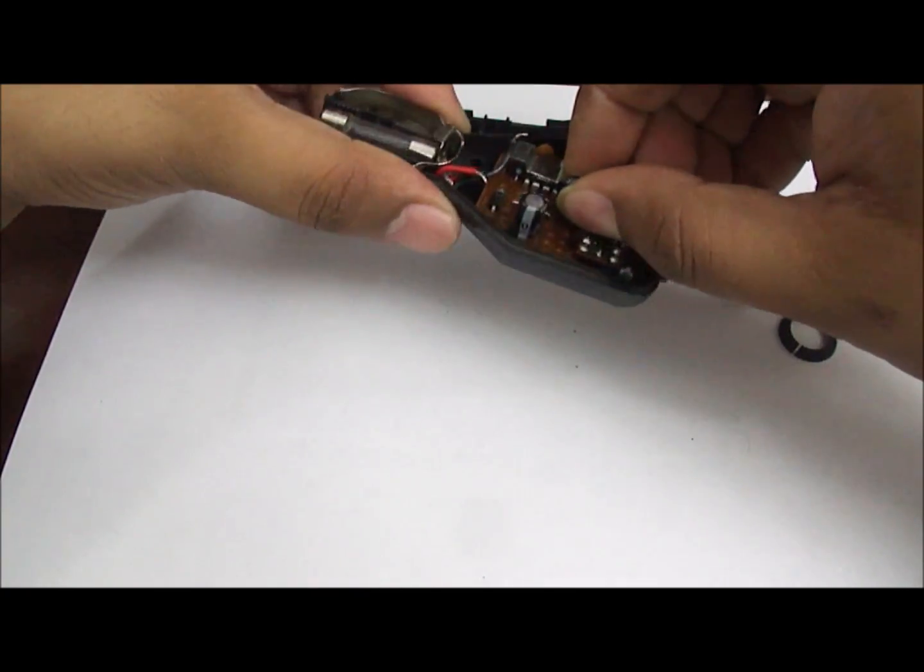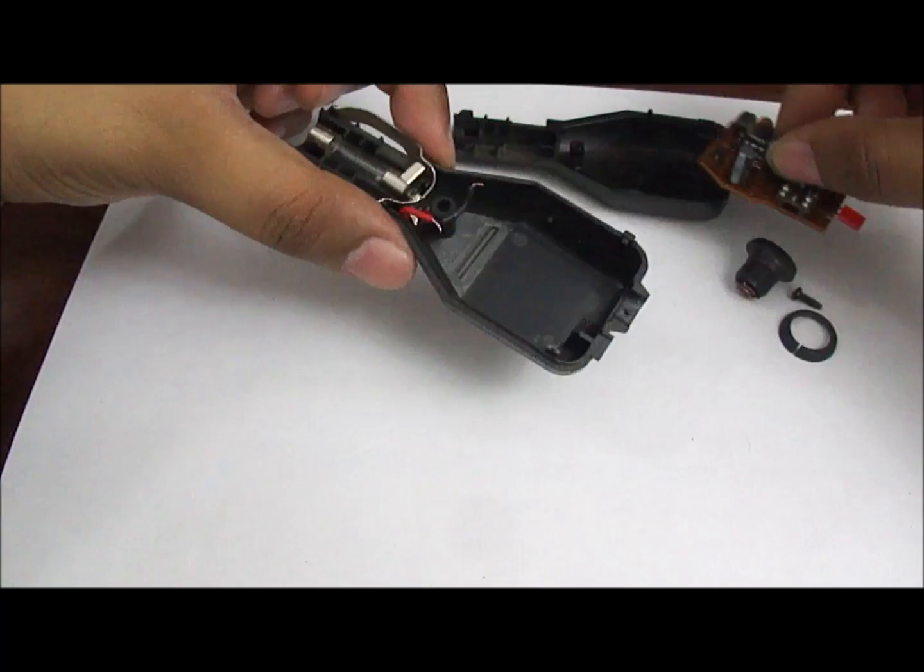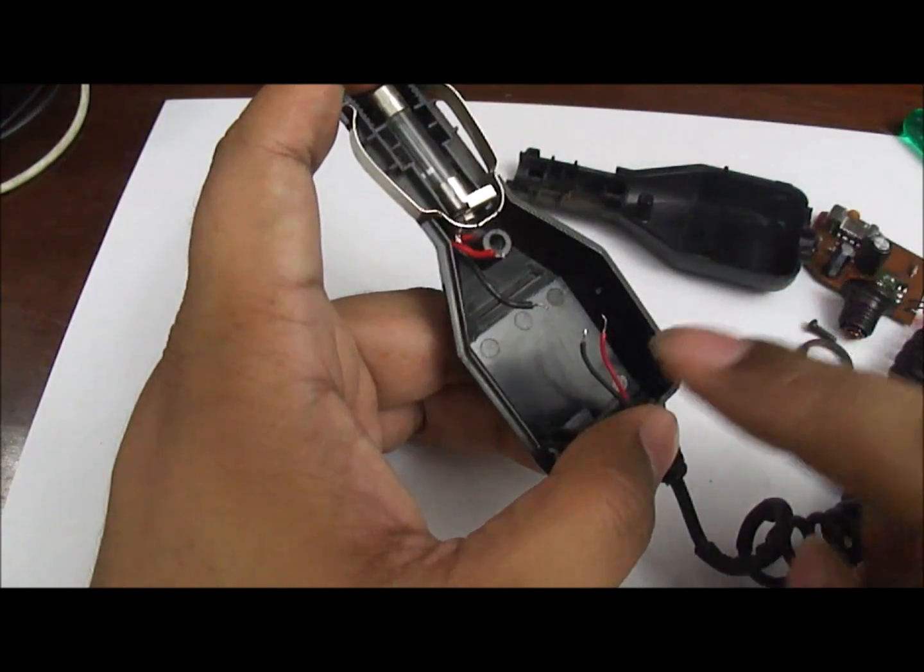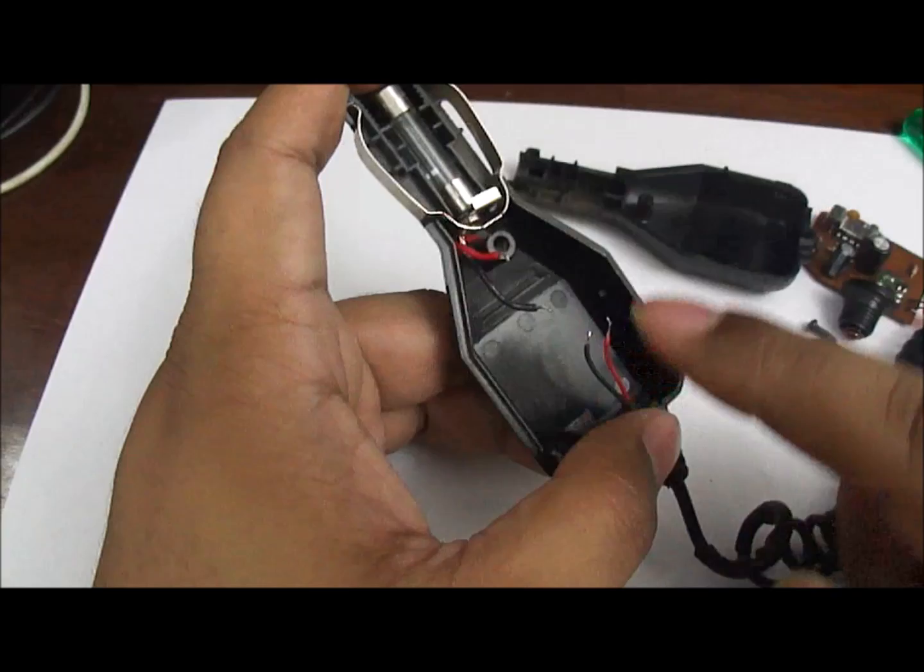Next we cut all the wires going into the PCB and take it out. Now we should be left with two sets of black and red wires.